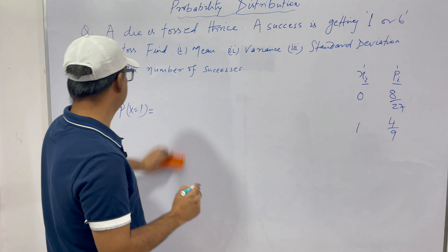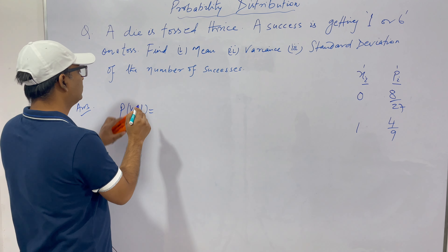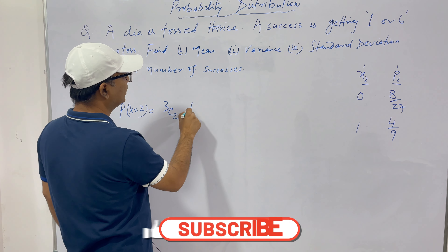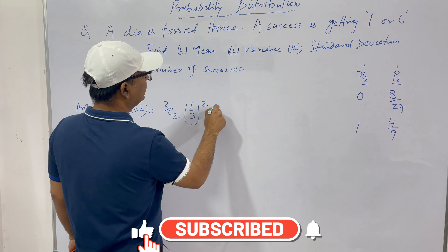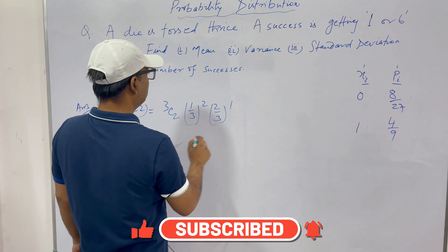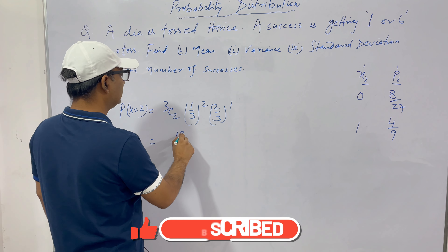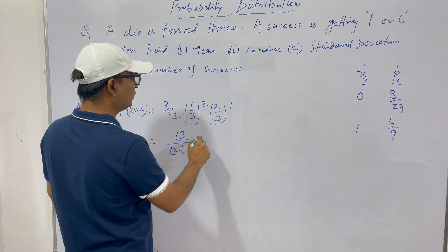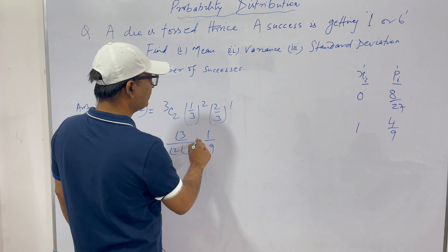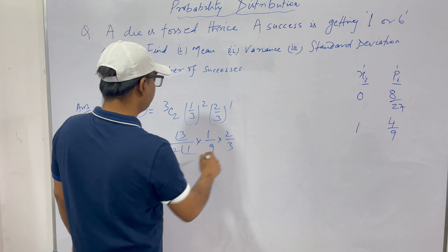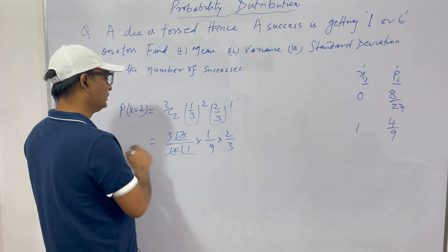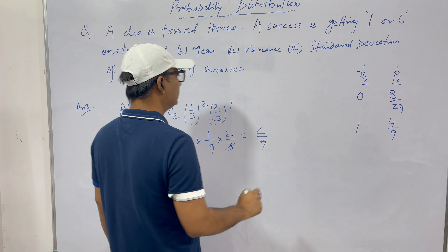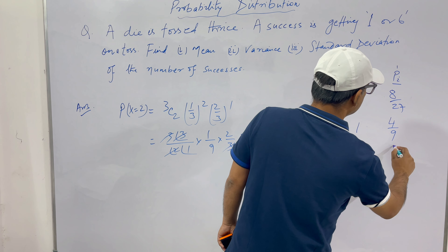Let's calculate for X = 2. P(X = 2) = 3C2 × (1/3)^2 × (2/3)^1. This is (3!/2!1!) × (1/9) × (2/3) = 3 × (1/9) × (2/3). The 3 cancels, giving 2/9. So for X = 2 the probability is 2/9.